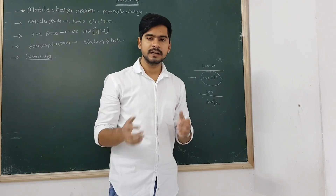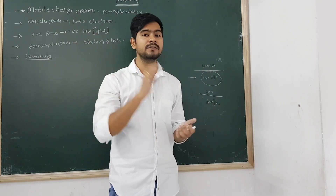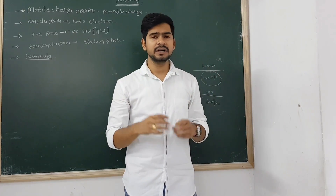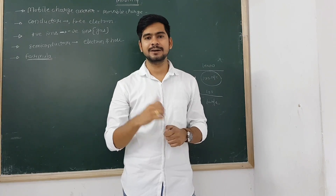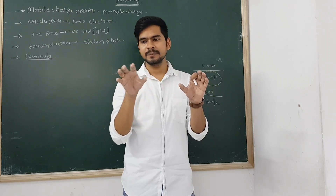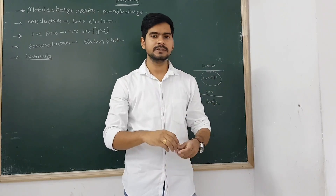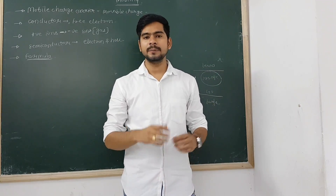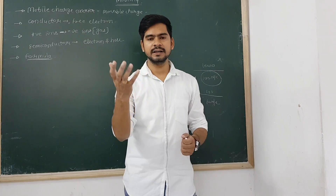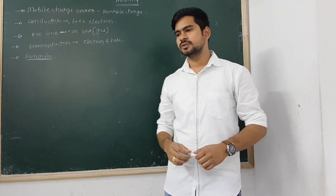Different batteries provide a different electric field, and because of that different electric field there is a different velocity. So in one sentence: the ratio of drift velocity to the electric field is called mobility. Mobility is basically a property which shows how much velocity is generated according to the electric field. We will prove this in a mathematical equation, but the key idea is that the ratio of drift velocity to the electric field is called mobility. Let's derive the equation.